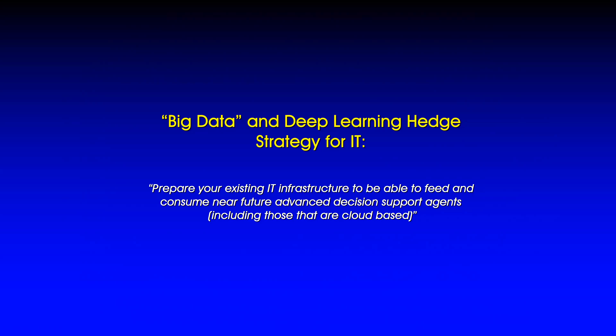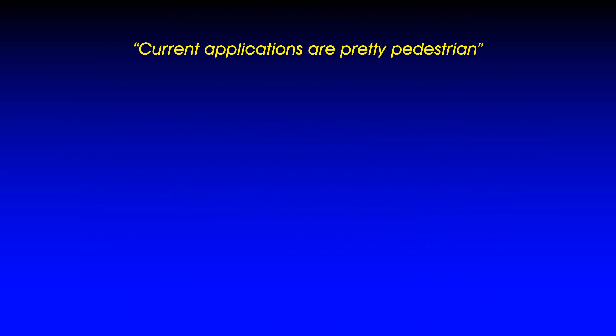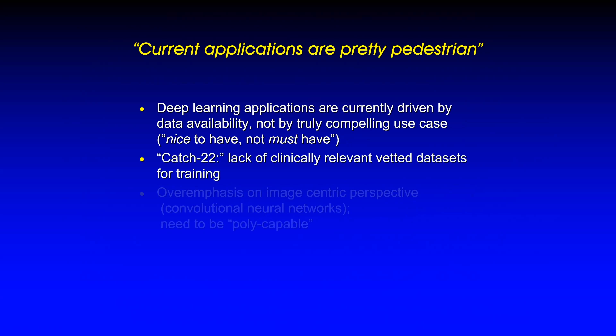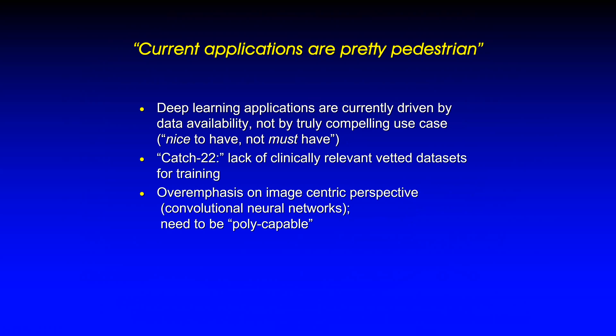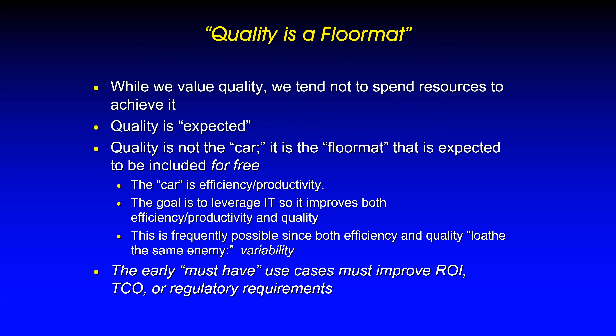One advantage and one hedge strategy: prepare your existing IT infrastructure to feed and consume future agents including AI. Hit your wagon to analytics, because it may be difficult to convince IT to invest for deep learning when we have no killer must-have apps yet. However, big data and analytics is something many people in the C-suite are interested in, and that requires similar interoperability. The real benefit of these technologies is not just extracting information from images but also from unstructured narratives — these systems need to be poly-capable.